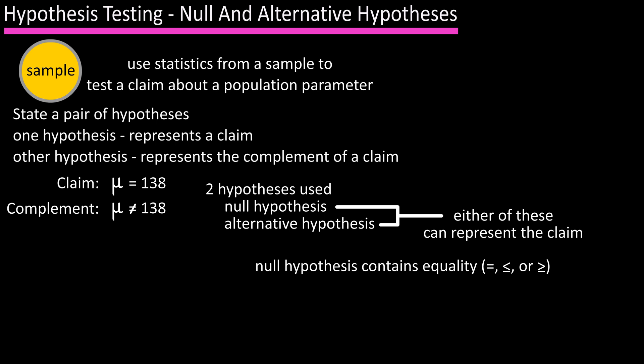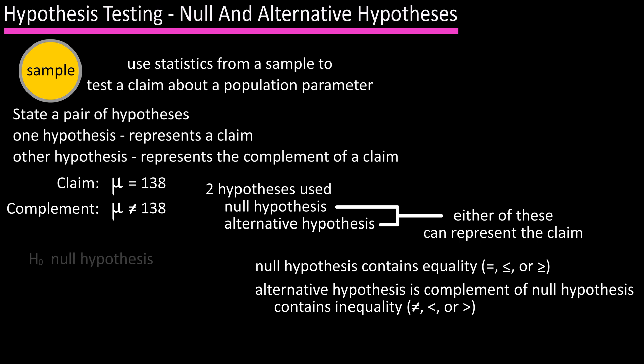The alternative hypothesis is the complement of the null hypothesis and it contains a statement of strict inequality: not equal to, greater than, or less than. The symbol often used for the null hypothesis is H sub zero or H naught, and the symbol used for the alternative hypothesis is H sub a or H sub one. I will be using H sub a in these hypothesis testing videos.